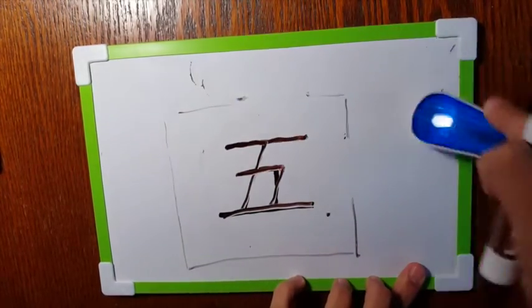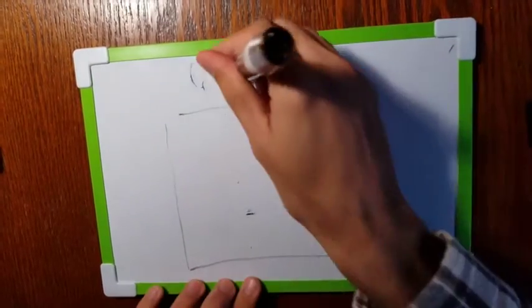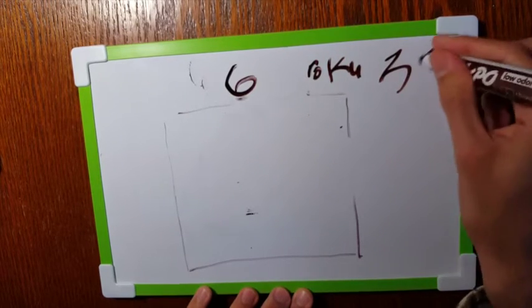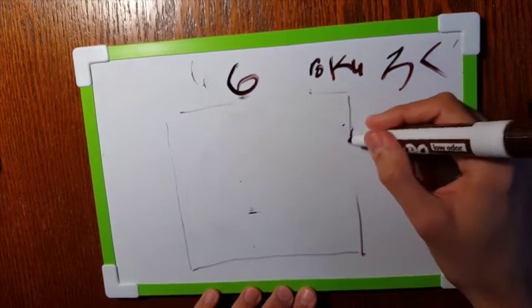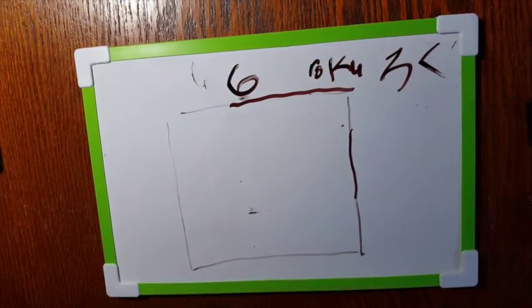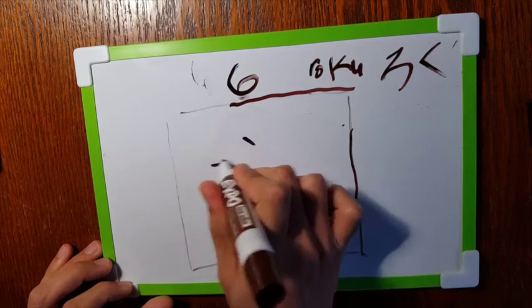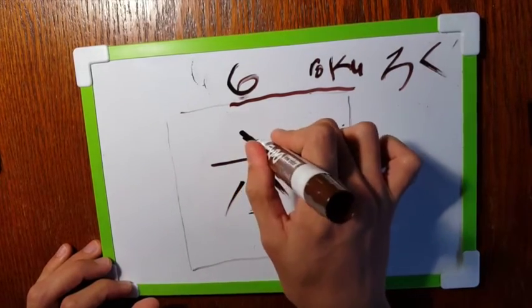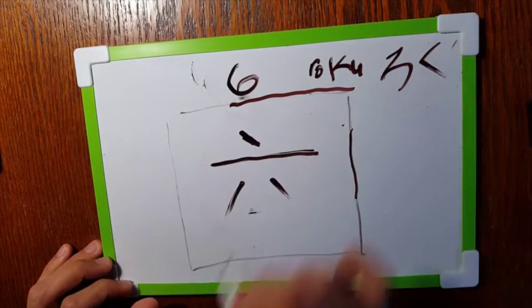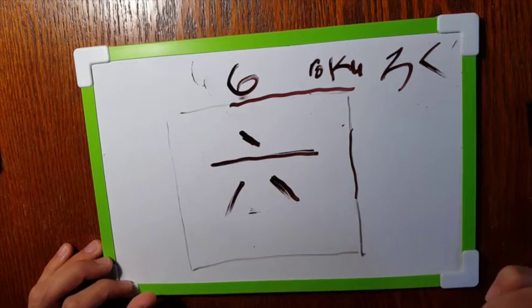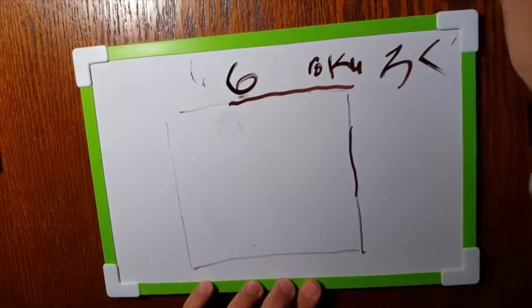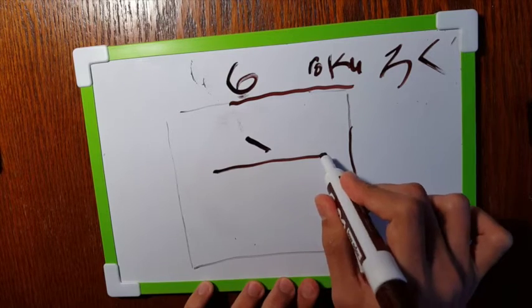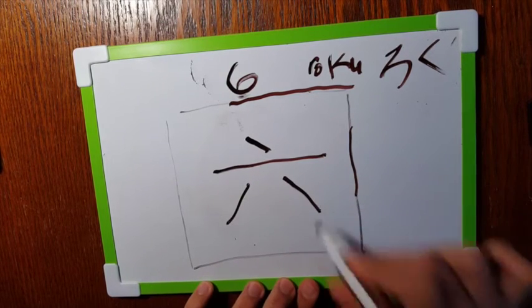Let's proceed to number six. Roku. So one, two, three, four. Get it? One, two, three, four. I'll do it one more time. Start here. One, two, three, four.